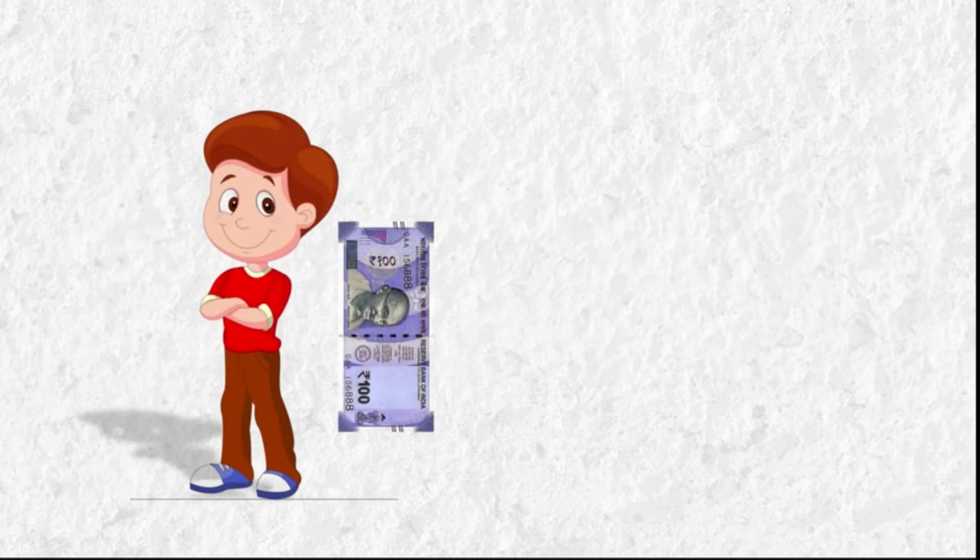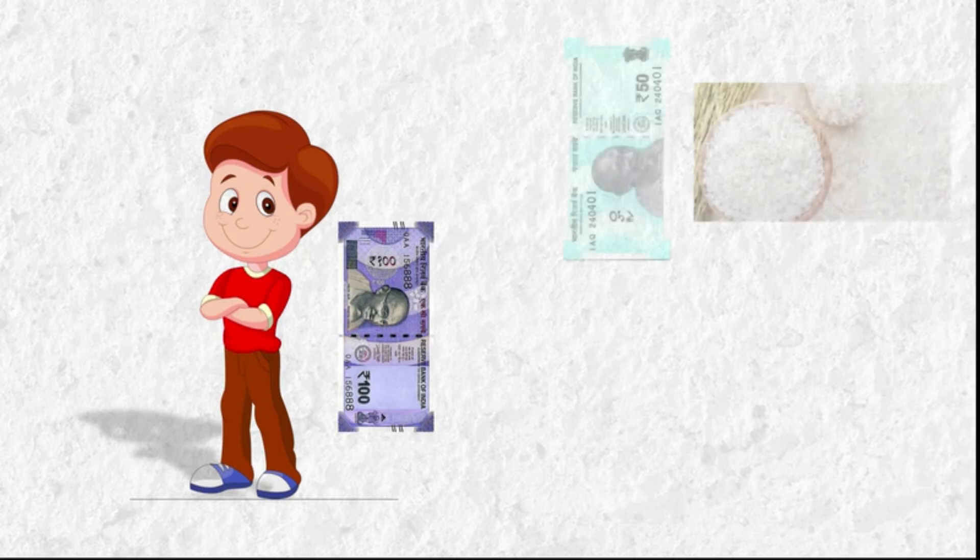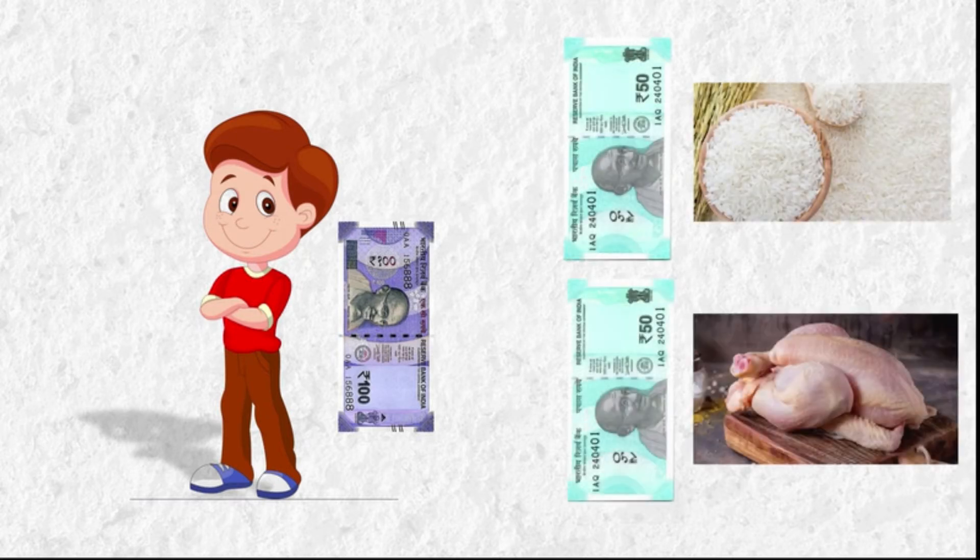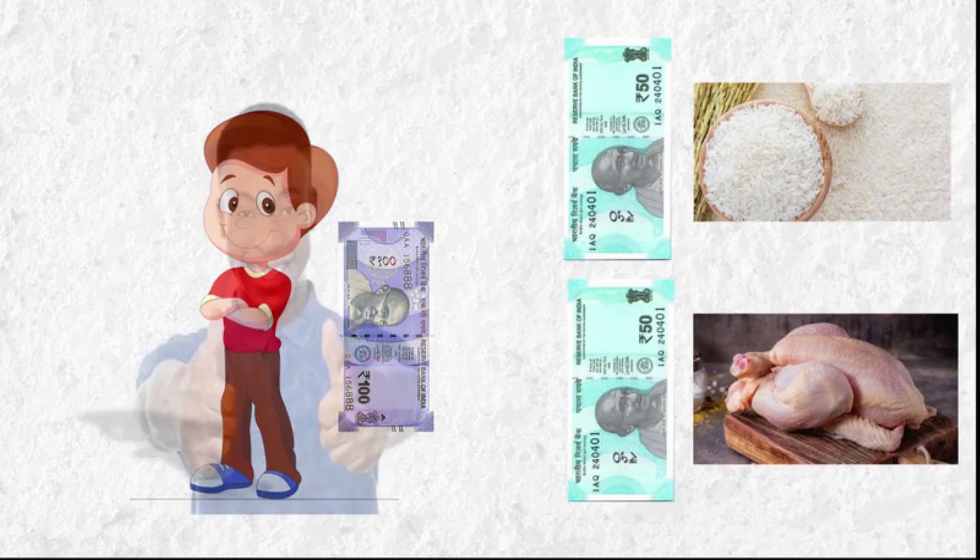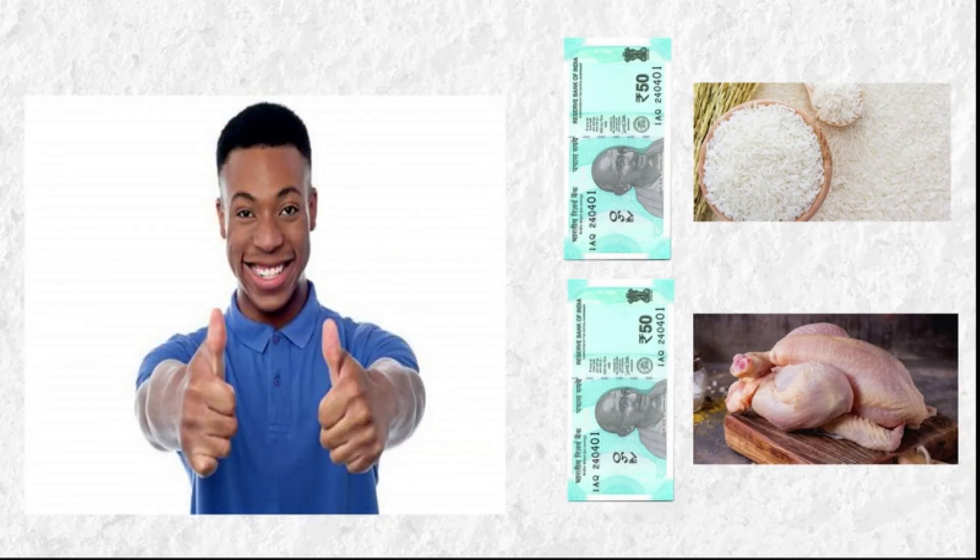Let's understand with an example as we always do on iTube classes. Suppose Rajiv has 100 rupees and he needs to eat food. So he can spend 50 rupees on rice and 50 rupees on chicken. No problem, right? The meat is healthier and tastier to eat. Good choice.